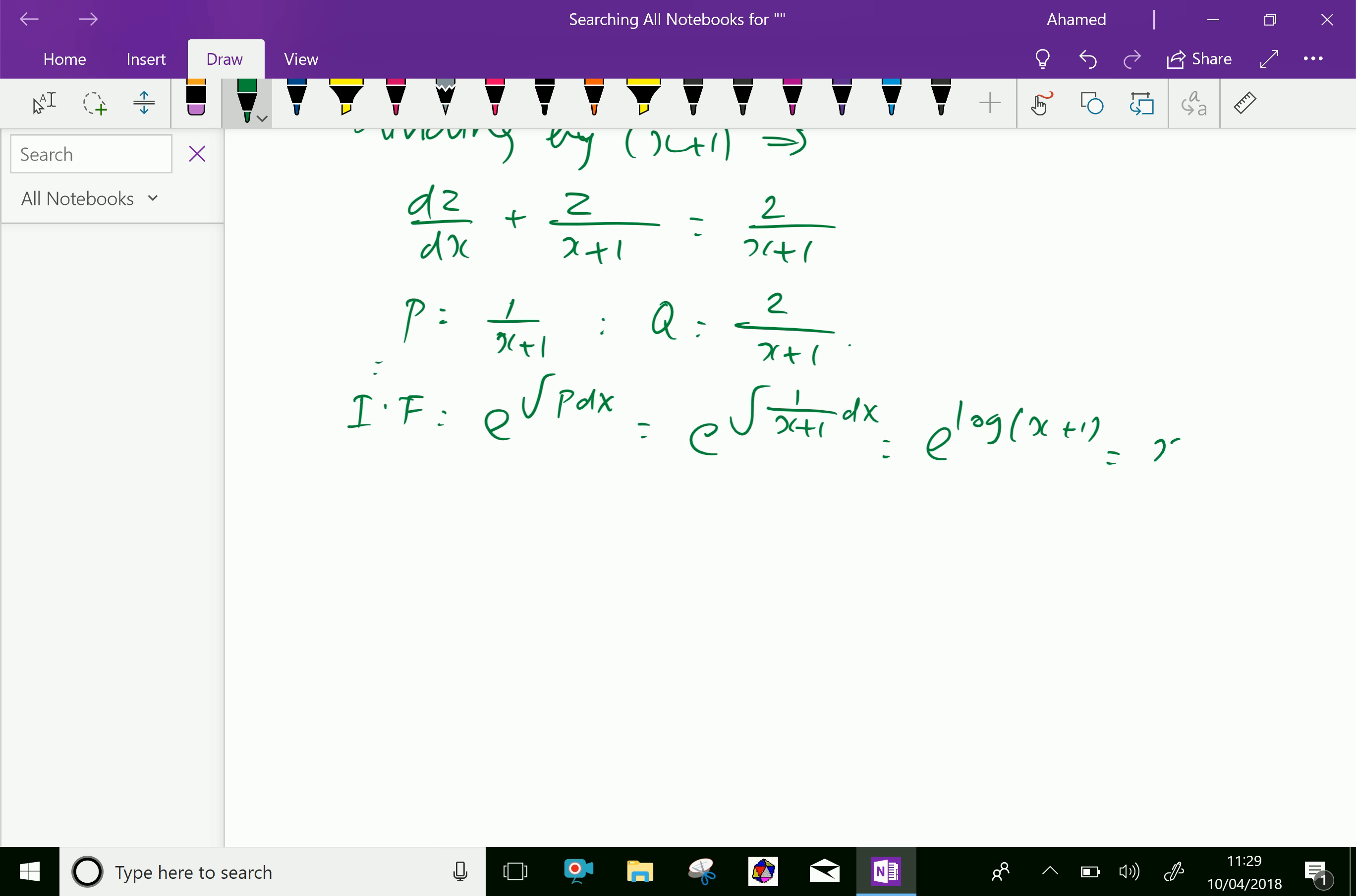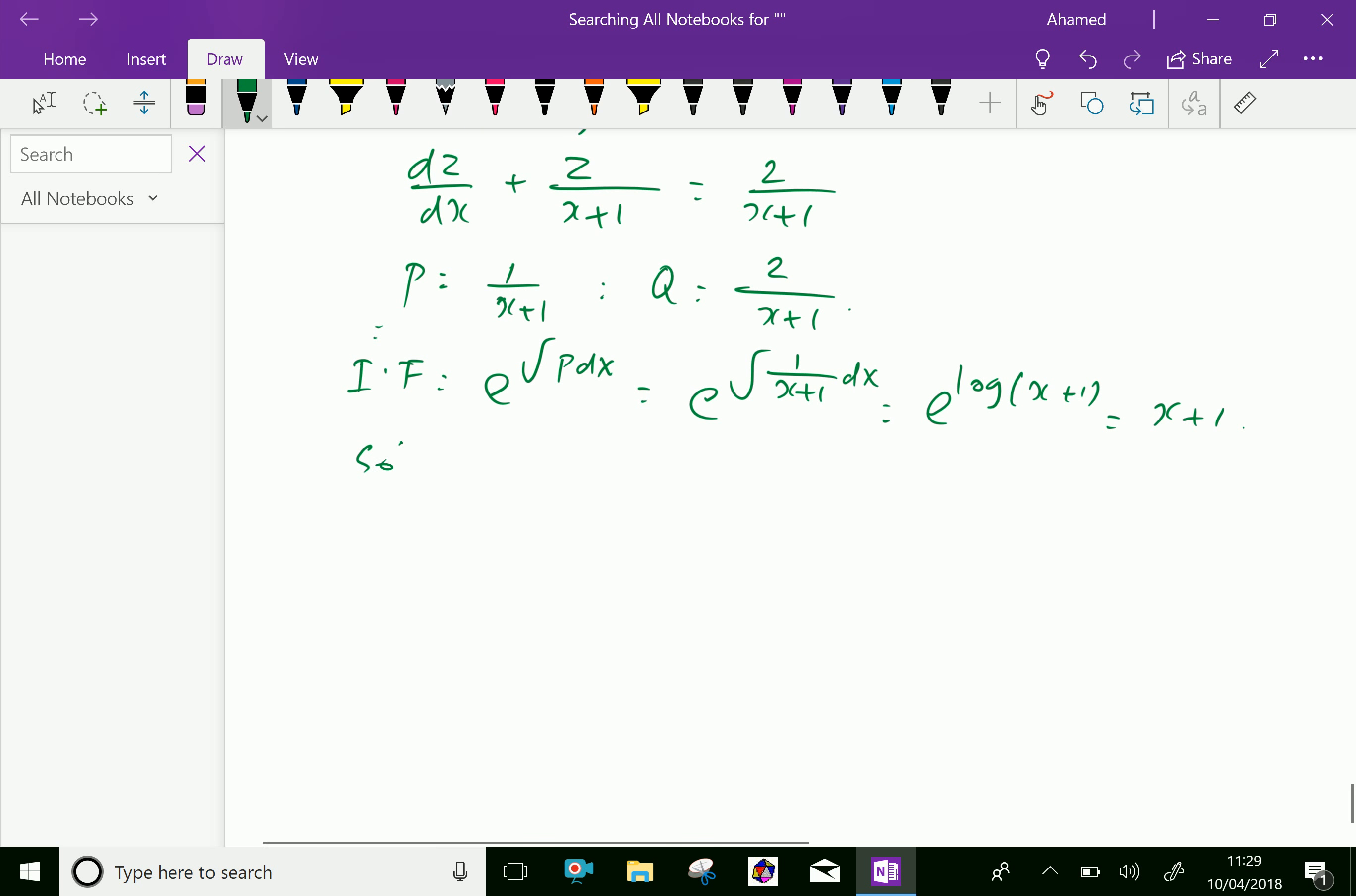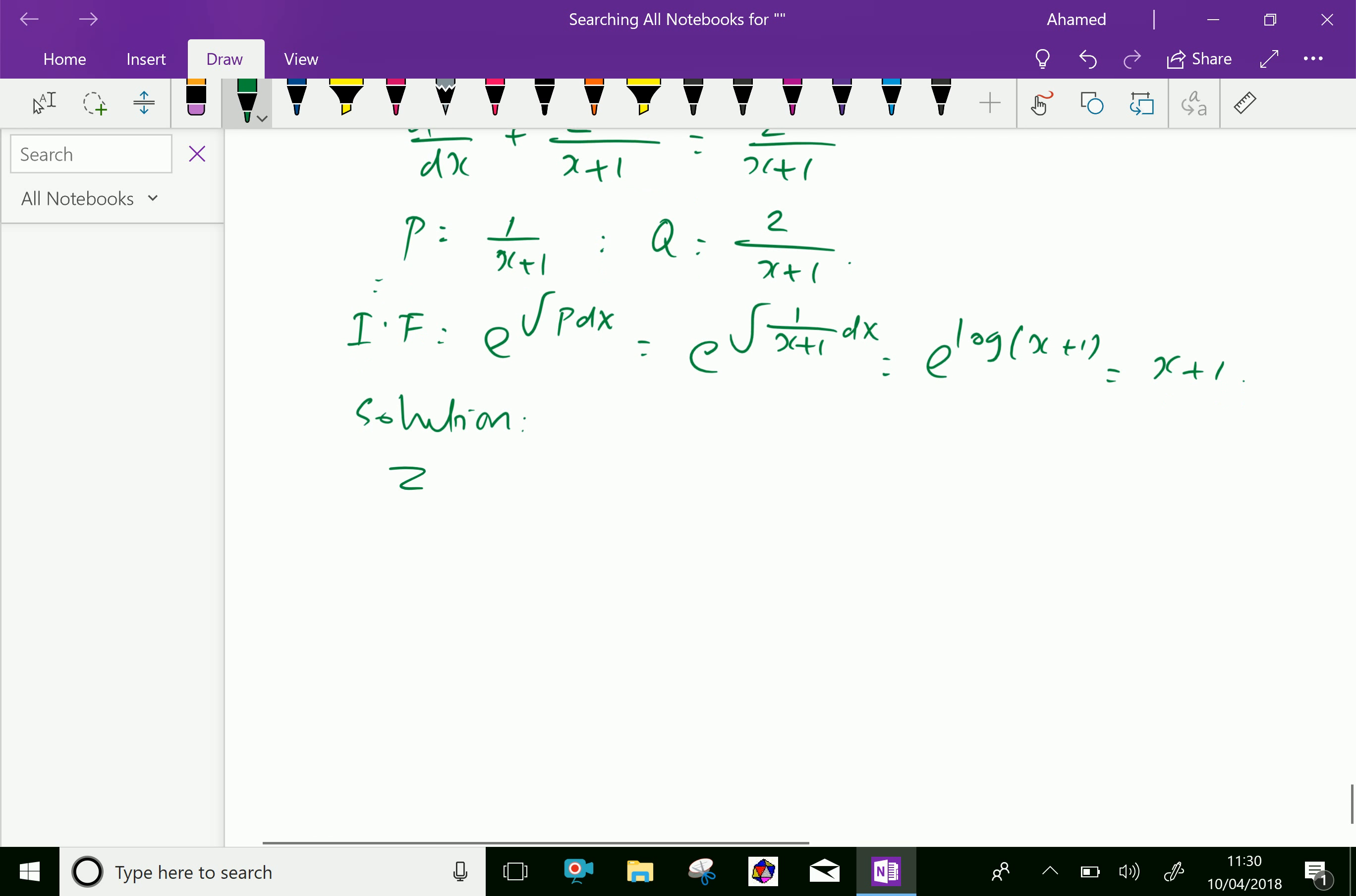The solution is z·(integrating factor) = z(x+1) = ∫Q·(integrating factor) dx + c, which equals ∫[2/(x+1)]·(x+1) dx + c.